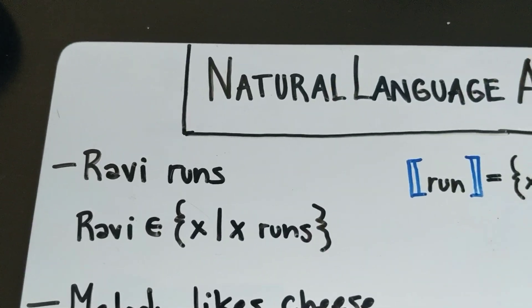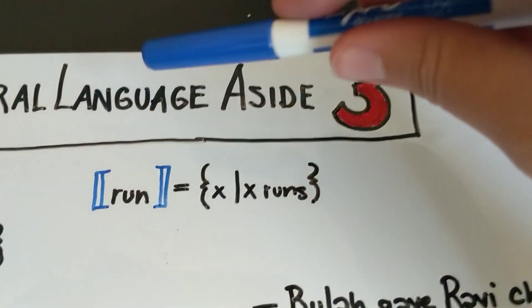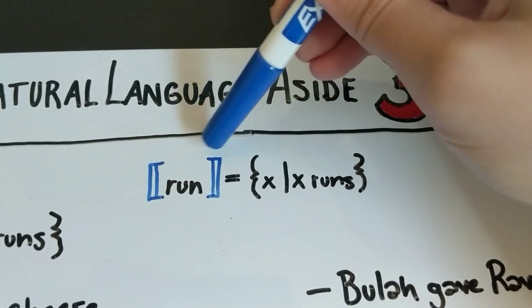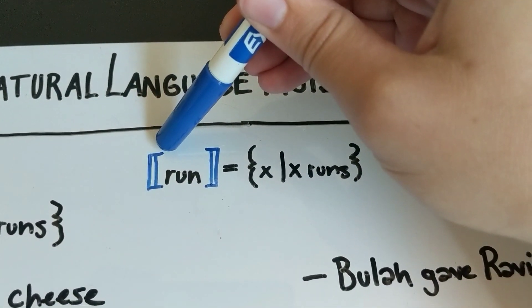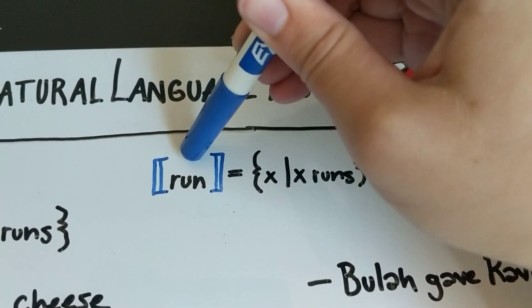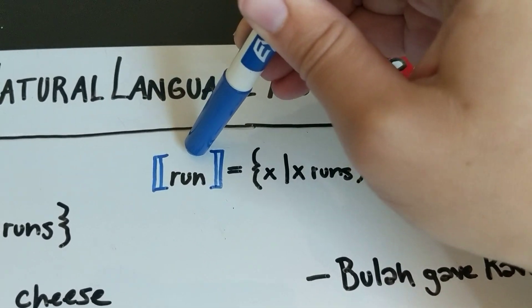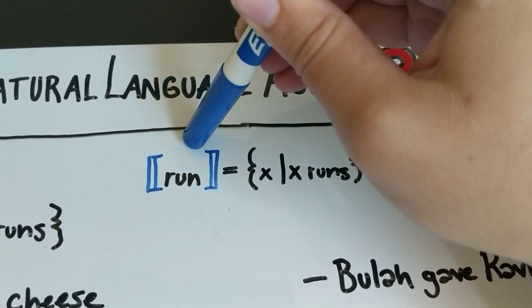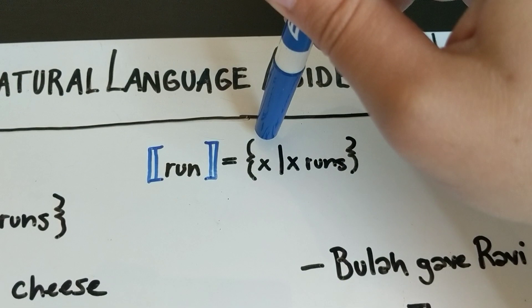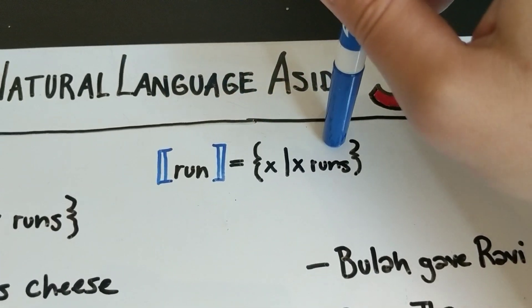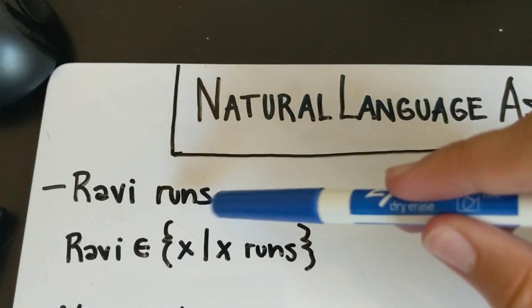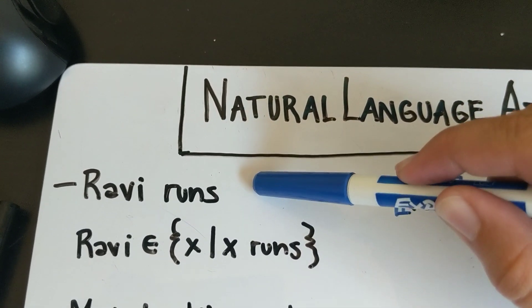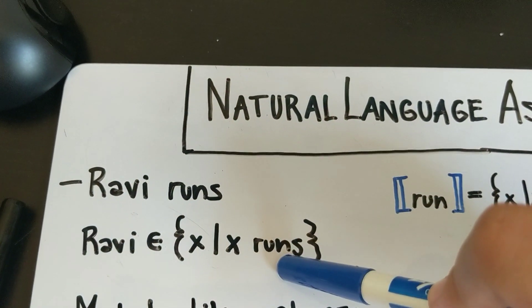The way that we write this in semantics is that the meaning of the word 'run' - that's what these funky double brackets mean, assess the meaning of whatever is inside - this means that the meaning of run is the set of all things x such that x runs. When you combine it with a noun like this, what you're saying is that the noun is a member of that set.